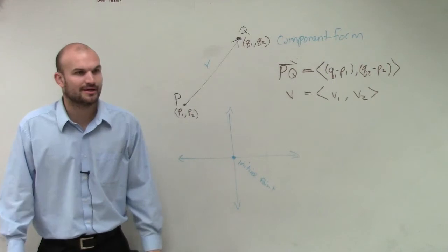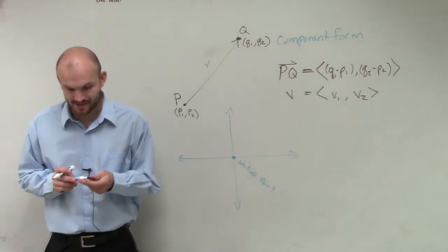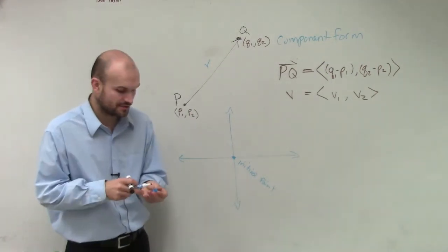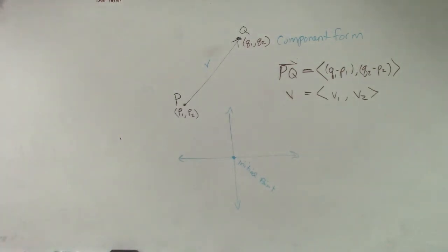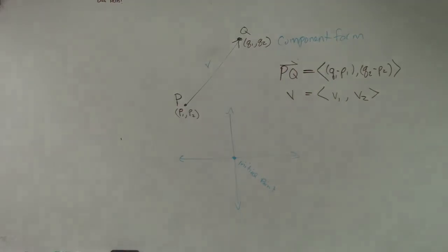We'll go through an example, probably make a little bit more sense when we use some real numbers. So I'll get to that in a second. We have one more thing to go over with that. Okay, so that is the component form. Then the last.